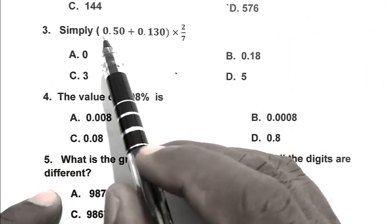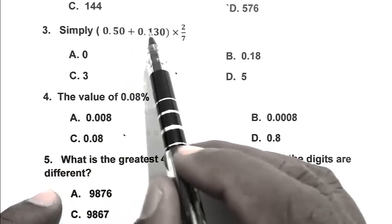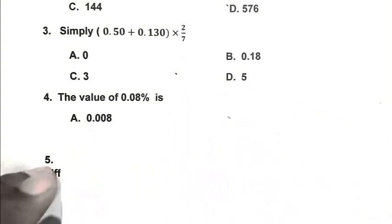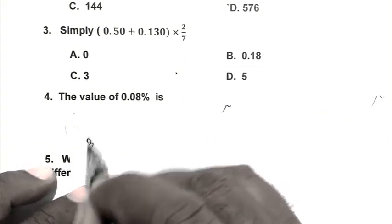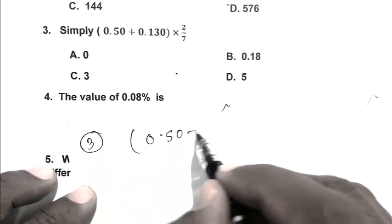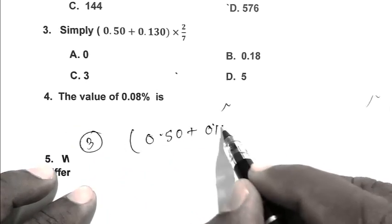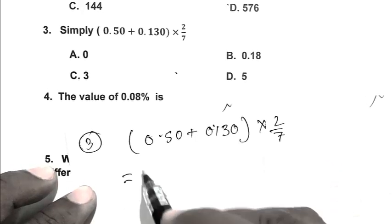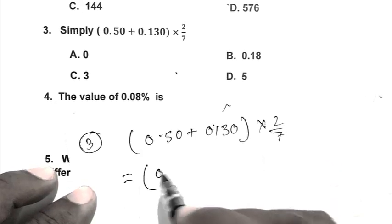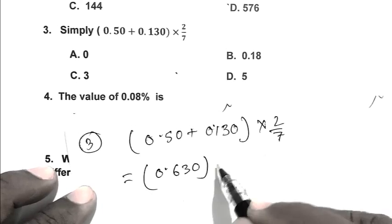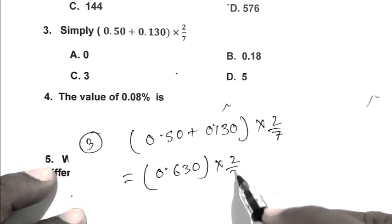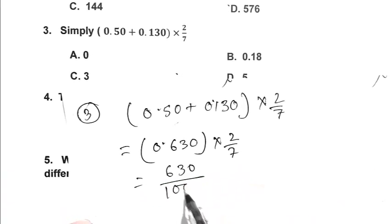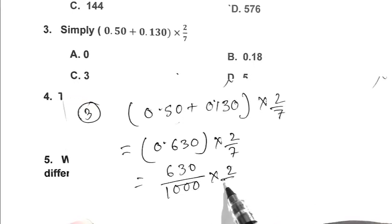Question number 3. 0.50 plus 0.130 multiplied by 2 upon 7. We can write it as 0.50 plus 0.130 multiplied by 2 upon 7. Eliminating the decimal point, we get 130 upon 1000 multiplied by 2 upon 7.